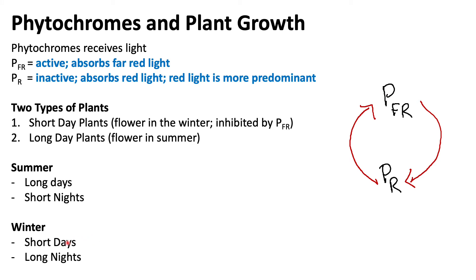In winter, we have shorter days and longer nights. We still see an accumulation of phytochrome far red during the day because sunlight is predominantly red light, but since the nights are longer, the phytochrome far red has more time to degenerate back into phytochrome red.